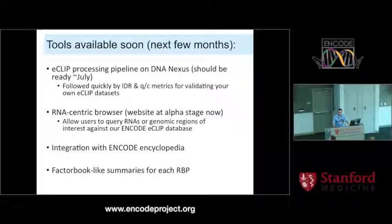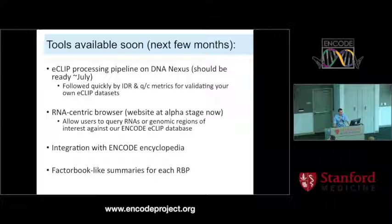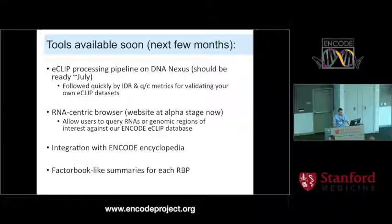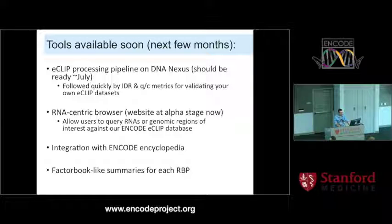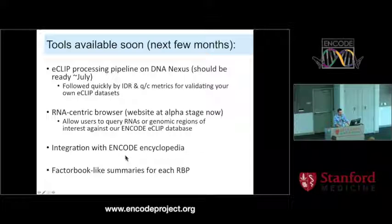All of the data is on the ENCODE DCC - go download it and use it. We are in the process of moving our processing pipeline onto DNA Nexus, which should be done around July. That should be followed quickly by our IDR and QC pipelines as well, which we've developed to very quickly QC datasets as part of ENCODE. We're building a browser for RNA-centric queries. We have a website now but it can only handle about ten people at once, so it's not ready yet, but it should be available soon - you'll be able to type in an RNA or region of interest and get the RBPs that bind there. We're also integrating with the ENCODE encyclopedia and factor book summaries for RBPs.